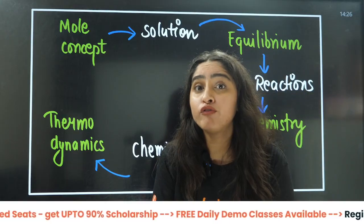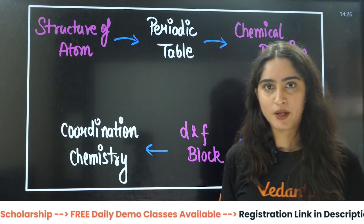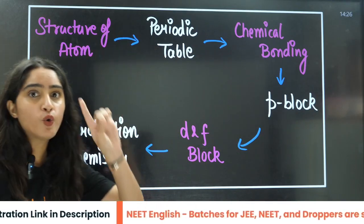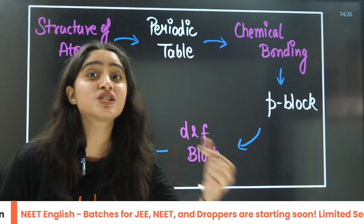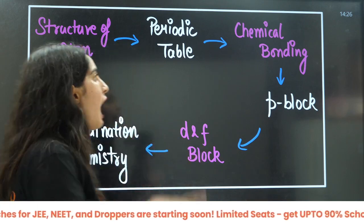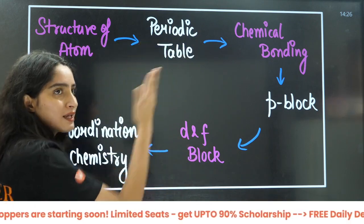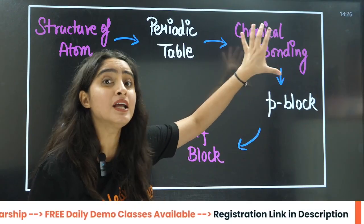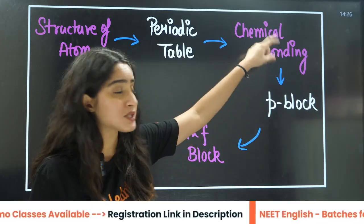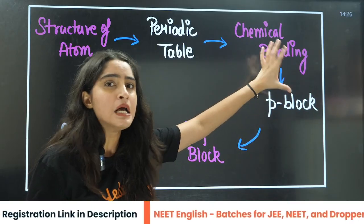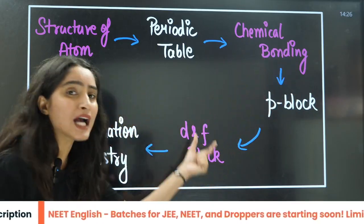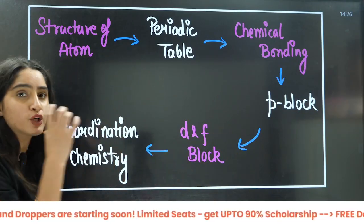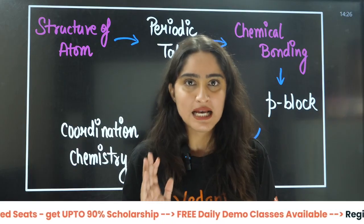If you want to focus on inorganic chemistry, first do structure of atom, then periodic table and periodic classification, then chemical bonding. Immediately after chemical bonding, do p-block, because some structures and concepts are shared. Then start with d and f block, and only after that start coordination compounds.